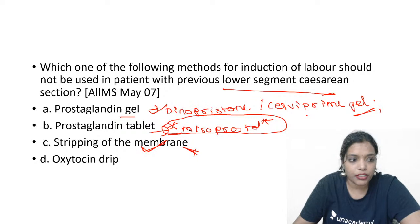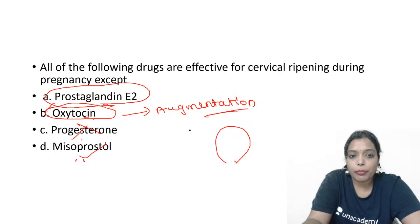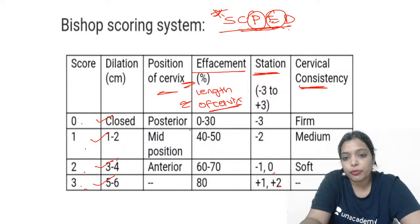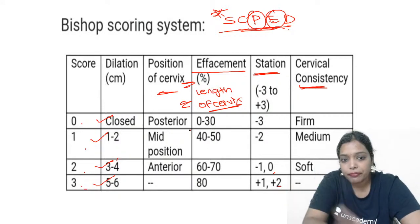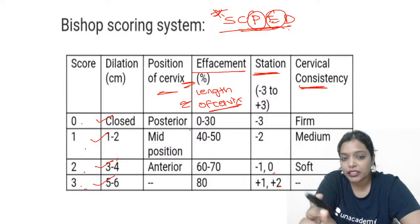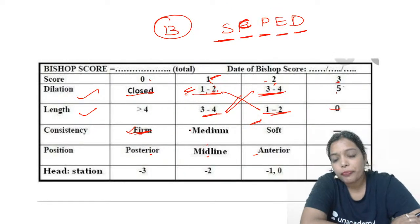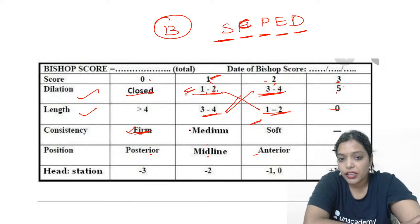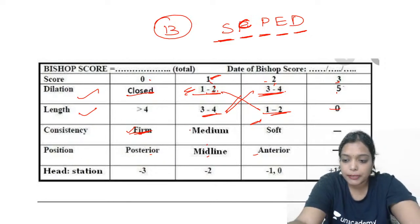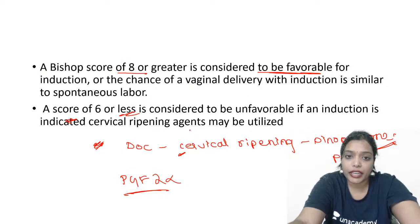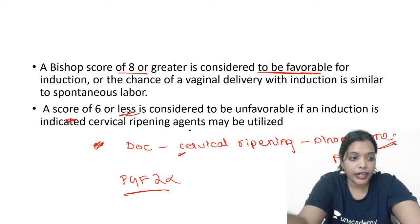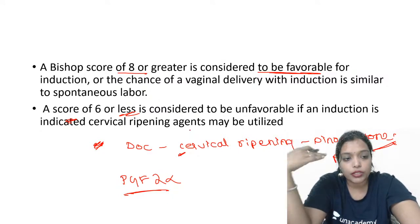Those were questions about Bishop's Score. Remember the parameters as SPEED: S-C-P-E-D — station, consistency, position, effacement, and dilatation. In modified Bishop's Score, effacement has been replaced by length of the cervix. A Bishop's Score of more than 8 is considered favourable. Thank you, I will be coming up with more sessions tomorrow.